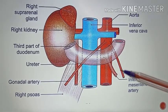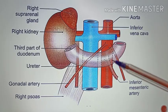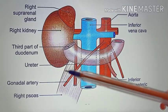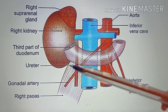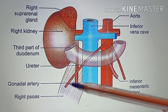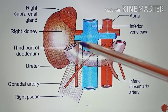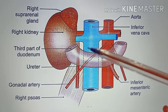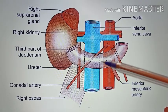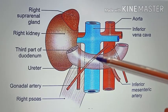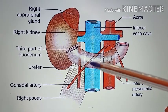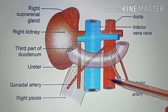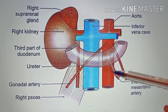Coming to the posterior relation, this picture shows the posterior relations of the third part of the duodenum. Posteriorly, you have the right psoas major muscle, the right ureter, the inferior vena cava, the right gonadal (testicular or ovarian) vessels, the aorta — that is the abdominal aorta — and also the origin of the inferior mesenteric artery.